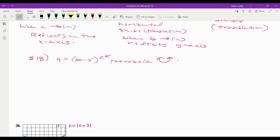Then it asks us to describe the translation. So my a is 1 because there's an imaginary 1 here, my b is 1, and my h is 5 because it's the opposite of what I see, and my k is 0 because there's nothing outside here.